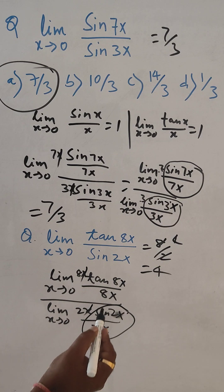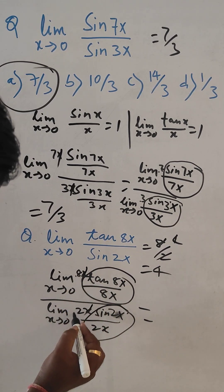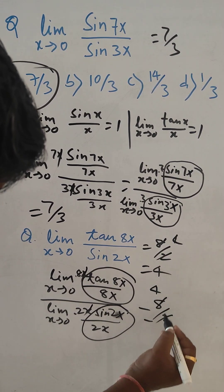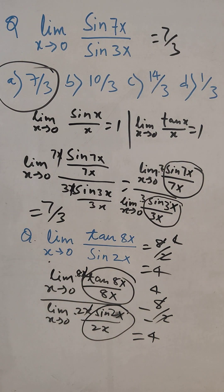And this portion will be 1, this portion will be 1. Then it is 8 by 2, then it is 4. So answer for this is 4. You got it.